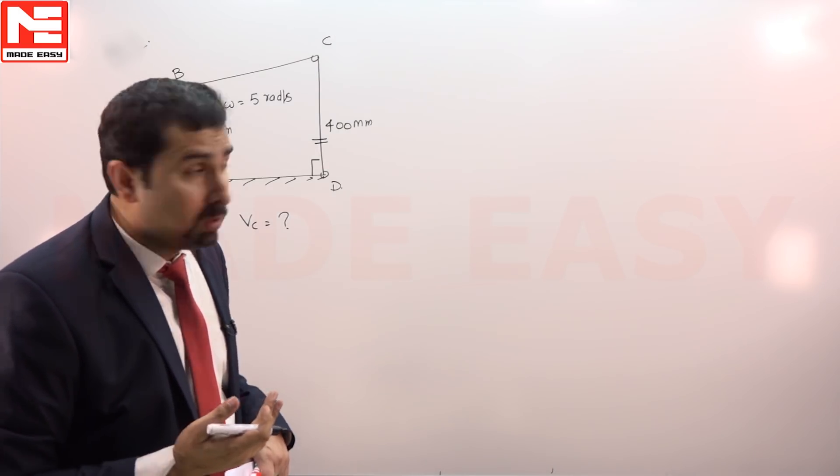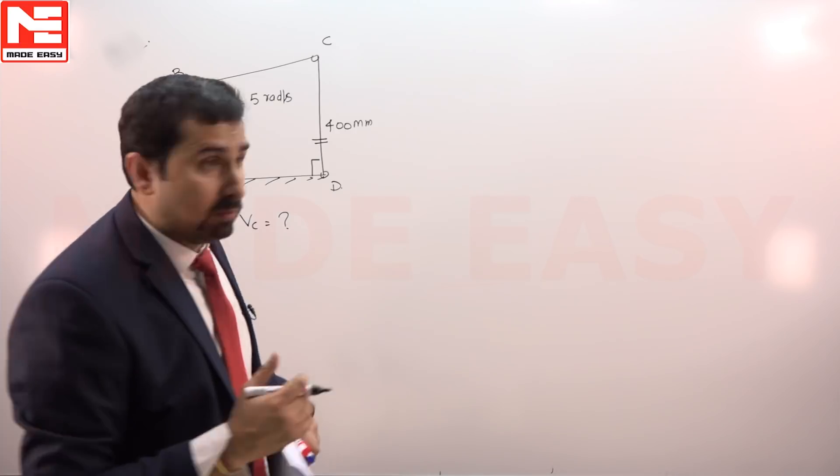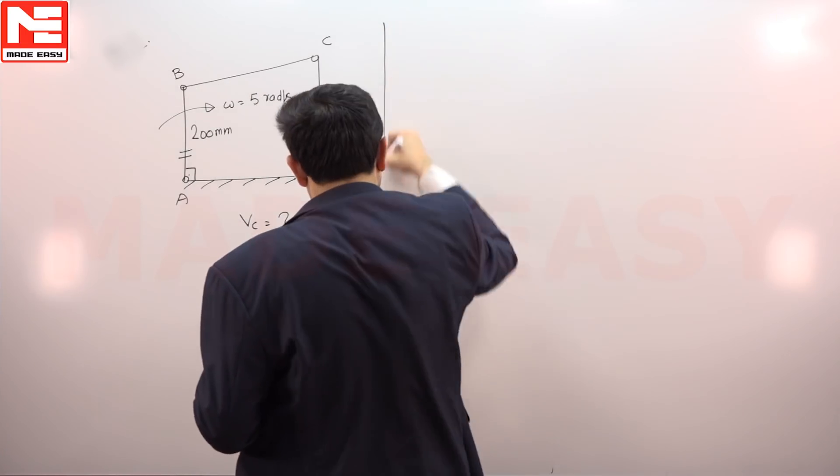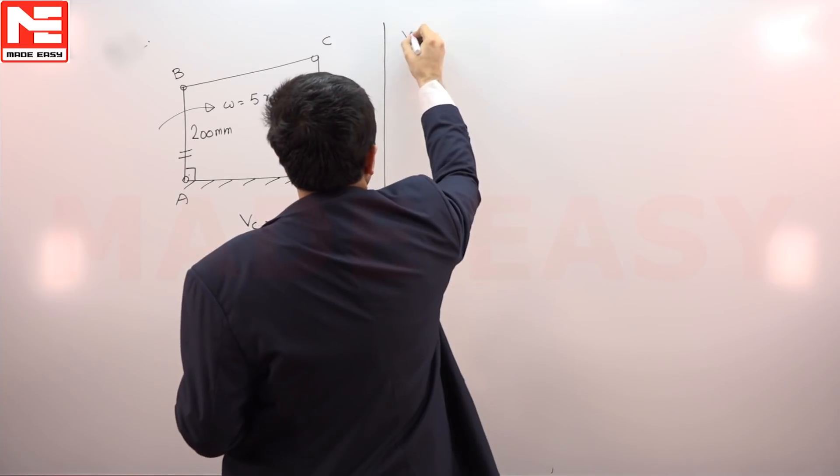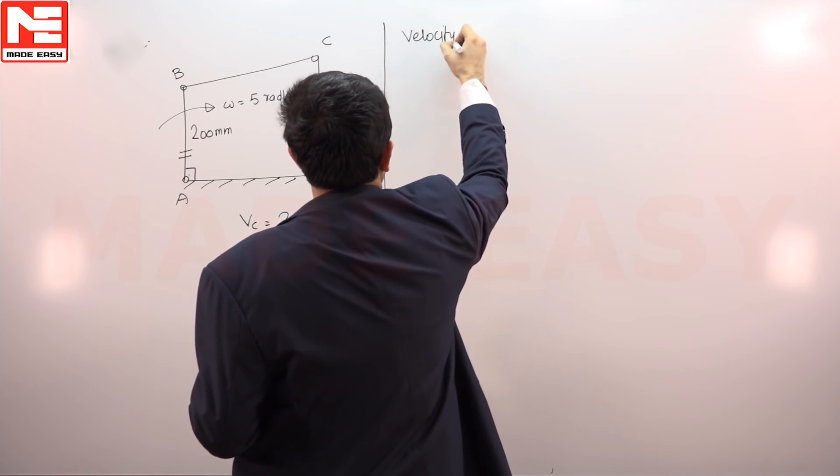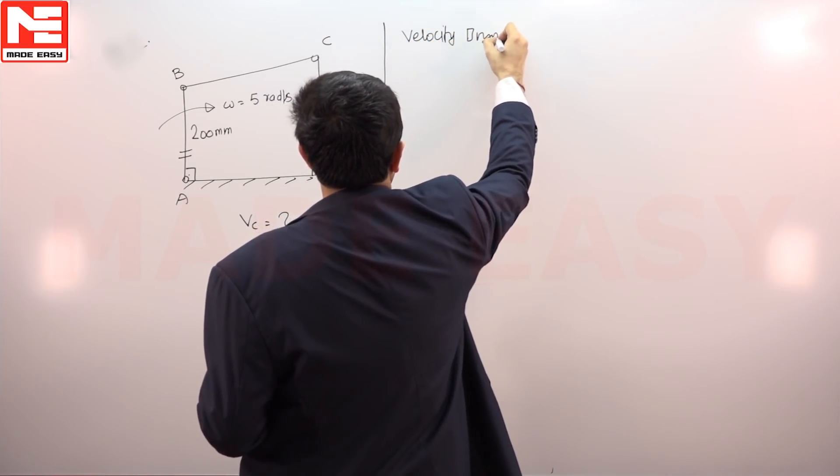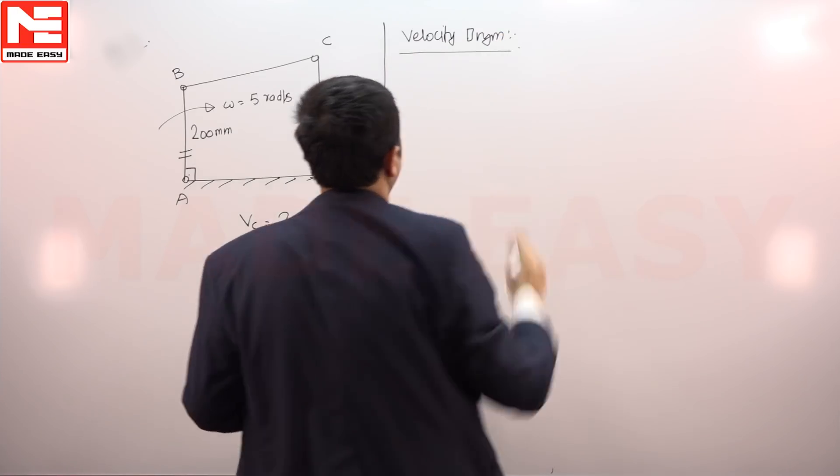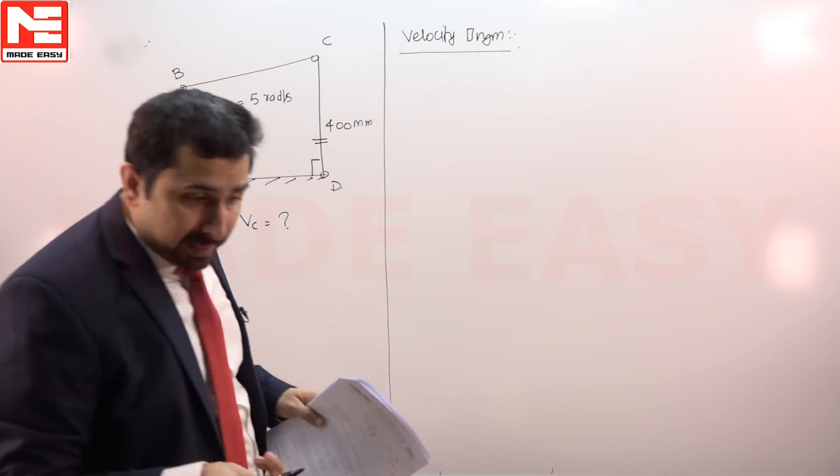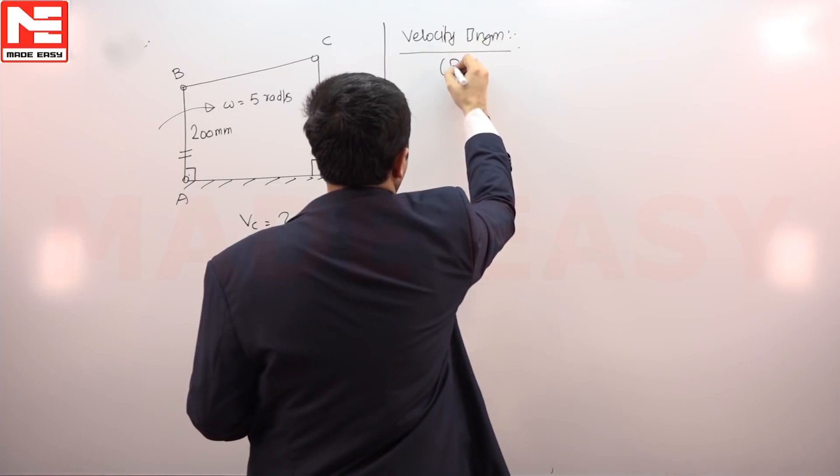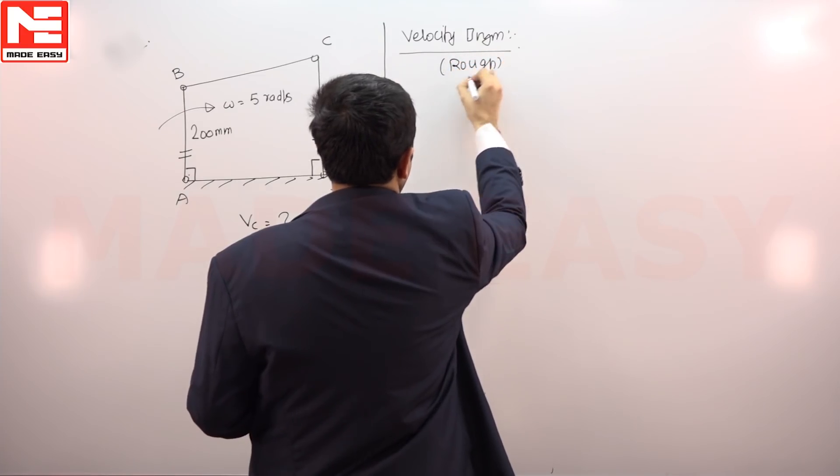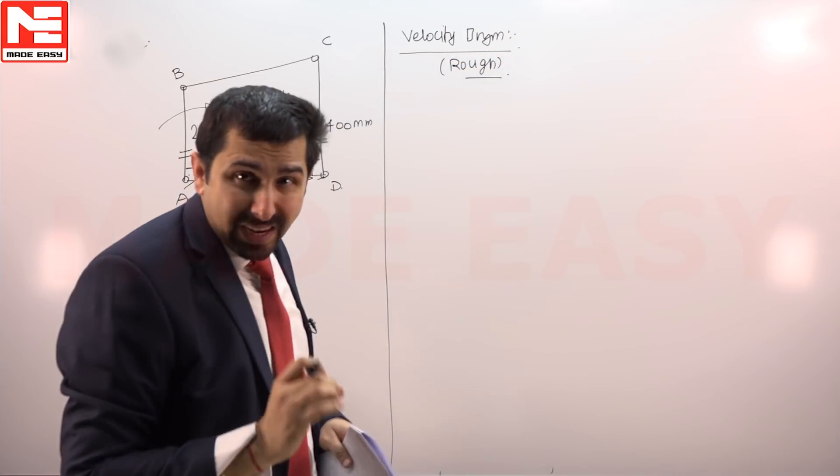The best way to approach is the relative velocity approach. If we plot the velocity diagram at this moment in rough, because it is an objective question, nothing has to be done formally here.